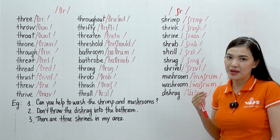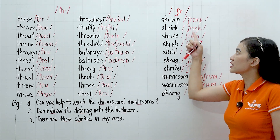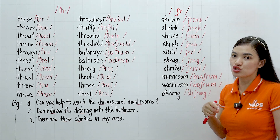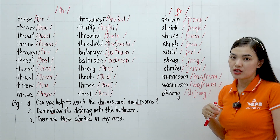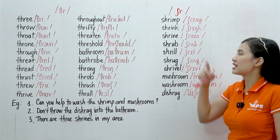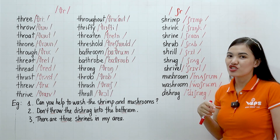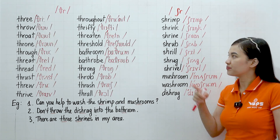So we have: shrimp, shrimp, shrimp. This one — shrink, shrink. This — shrine, shrine, shrine.